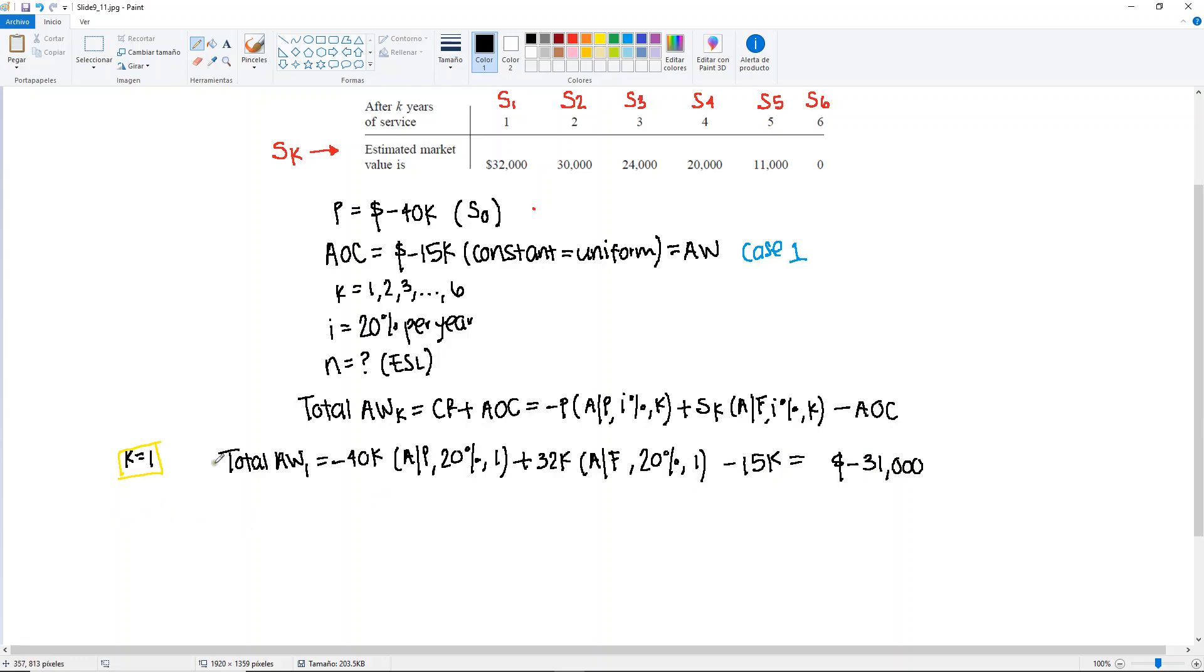You're going to do the exact same thing. Let's do this for K equal to 2. So now we're going to have the total annual worth in year 2. Remember, same P. Minus 40,000. Find A given P. 20% but now K is 2.